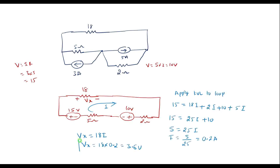So this is the required final answer. This is how we are supposed to apply source transformation and source shifting to reduce the network. Thank you for watching.